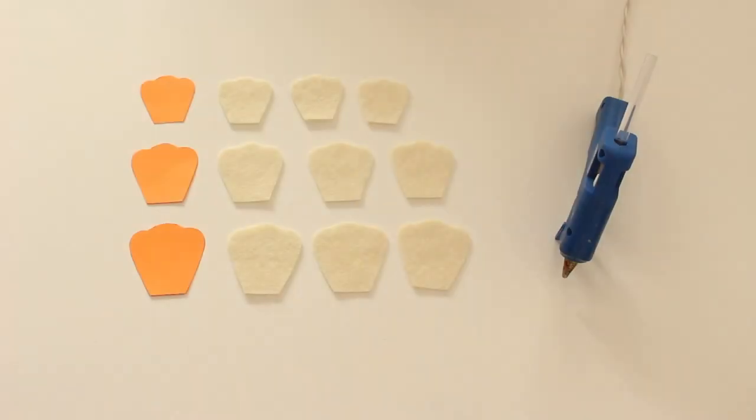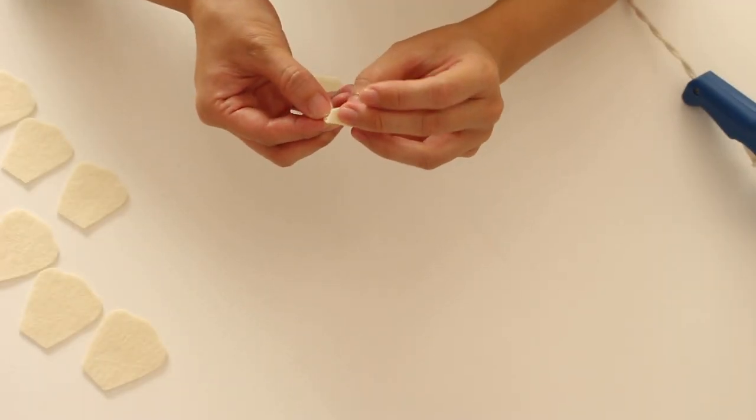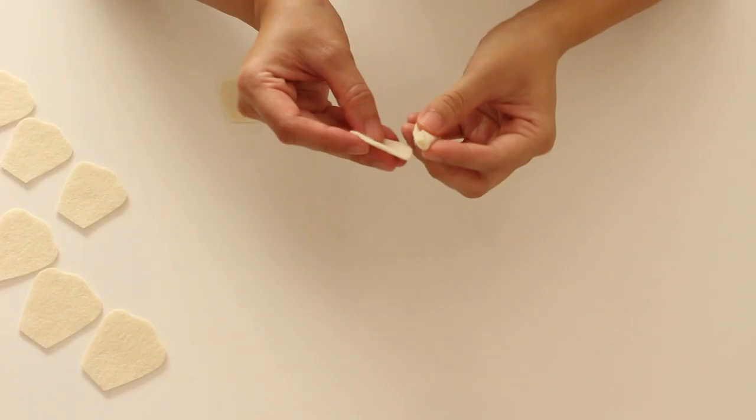For the rose in antique white, I cut out 3 small petals, 3 medium petals, and 3 large petals. I glue to the bottom of a small petal and roll it to create the center. Glue the other petals around it from small to large.